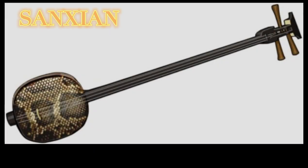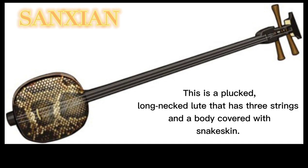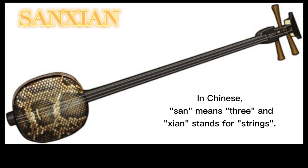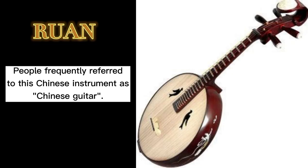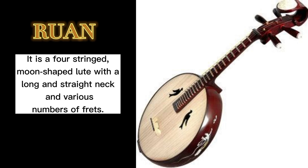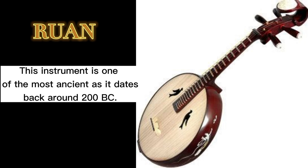The Sanxian is a plucked, long-necked lute with three strings and a body covered with snake skin. In Chinese, 'San' means three and 'Xian' stands for strings. Musicians use a piece of thin, hard plectrum made from animal horn to play this instrument. The Ruan, frequently referred to as the Chinese guitar, is a four-string moon-shaped lute with a long, straight neck and various numbers of frets, dating back to around 200 BC.